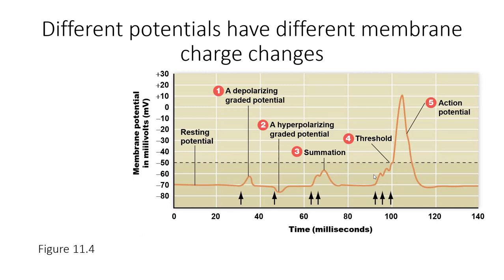Here is what these look like on a graph. You have a resting potential of negative 70 millivolts. There can be depolarization, that's what it looks like, and hyperpolarization. Two depolarizations occurring in a row cause summation where they are adding together. If these reach that negative 50 millivolts threshold, there is an action potential.